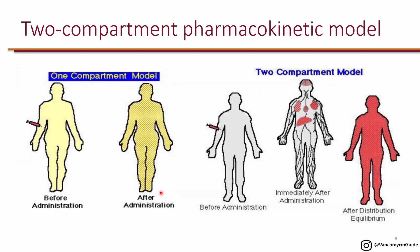Before we talk about vancomycin monitoring, it's important to understand the two-compartment pharmacokinetic model. In the one-compartment model, you administer the antibiotic and it stays in the central compartment — this is straightforward and easy to calculate kinetics. Because aminoglycosides are hydrophilic, their pharmacokinetics are very close to a one-compartment model. Although vancomycin is also hydrophilic, it has the ability to distribute into tissue and penetrate different tissues. Therefore, vancomycin shows a two-compartment model.